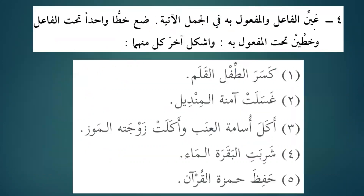Aiyyin — this is fil al-amr — aiyyin al-fa'ila wal-maf'oola bihi fil-jumal al-atiyati — specify the subject and the object in the following sentences. Put one line under the doer (al-fa'il) and two lines under the object (al-maf'ool bihi).